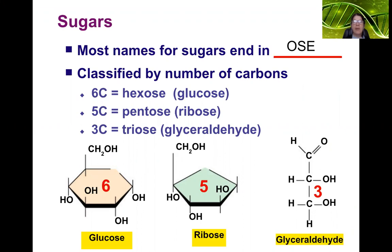Sugars are classified by the number of carbons. If they're 6, they're called hexoses, like glucose. If they're 5, they're called pentoses, like ribose. If they're 3, they're trioses, like glyceraldehyde.